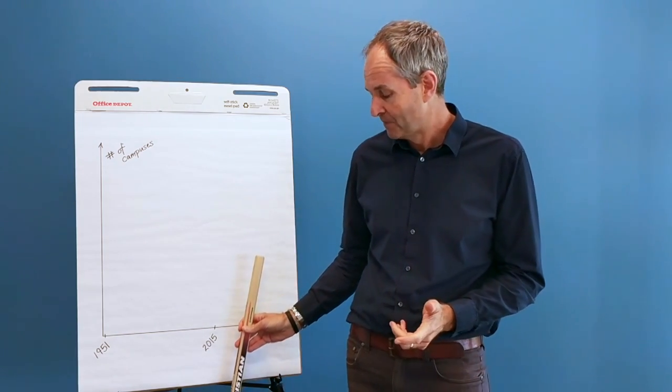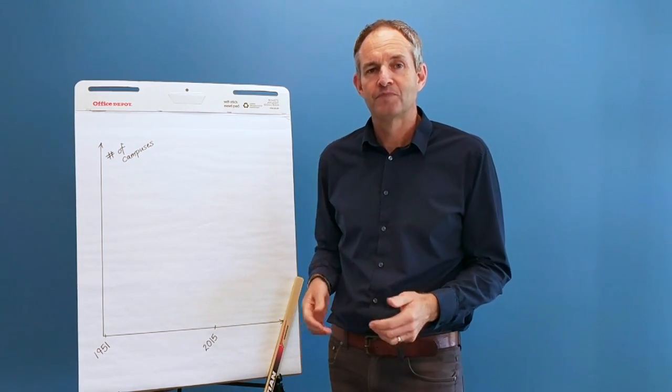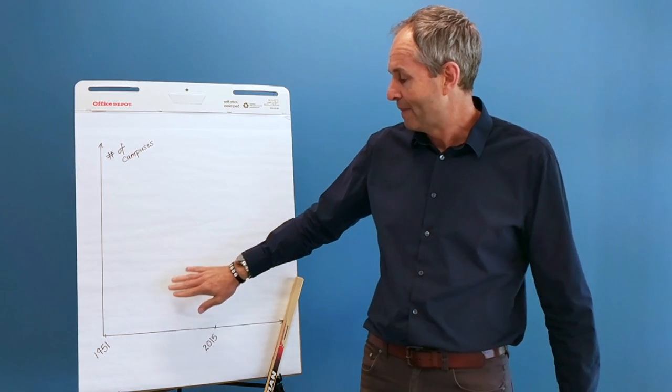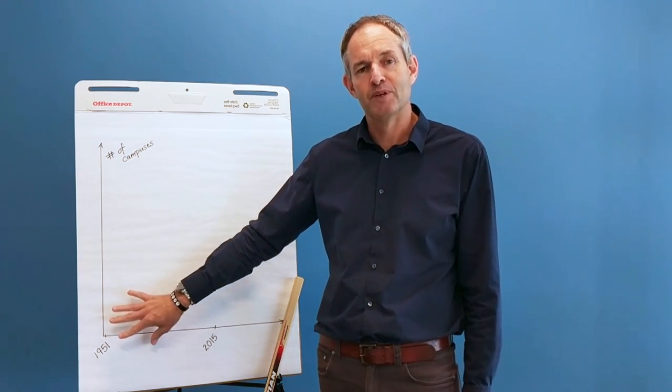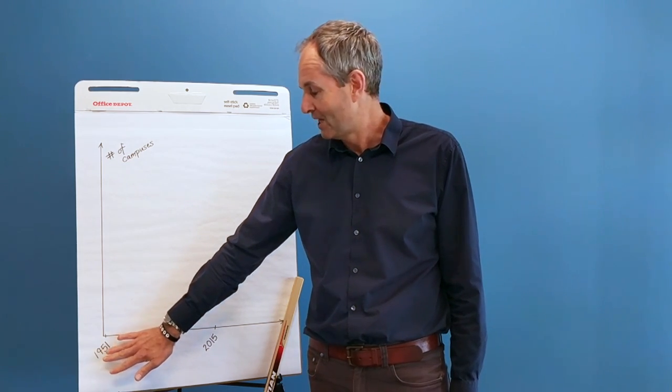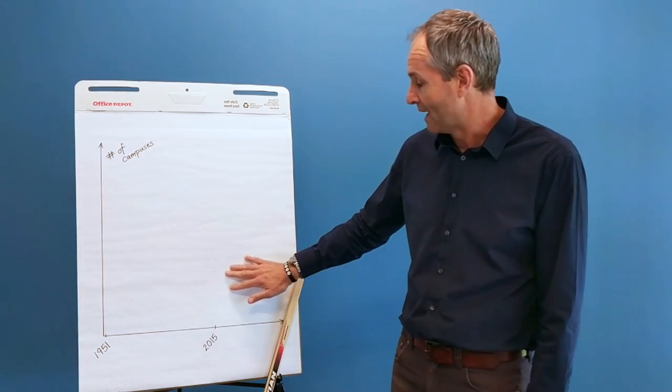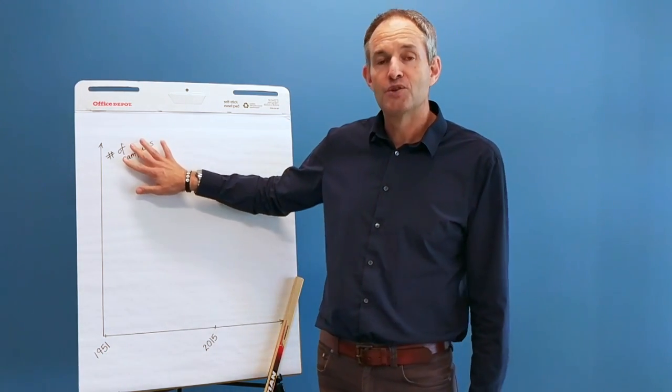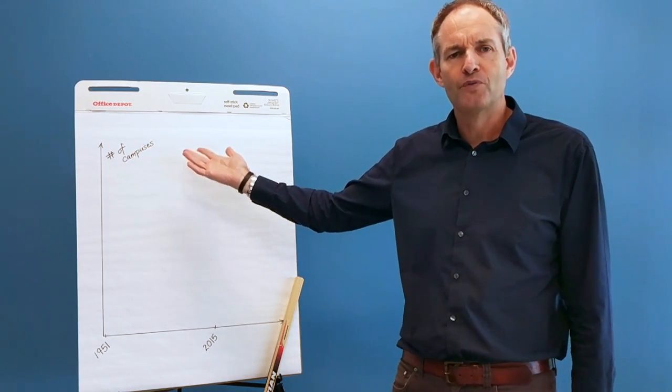Back in 2015, I was with our global campus team, and I drew a chart which basically tracked the growth of our campus ministry since we began with Bill and Von Bright at UCLA in 1951 to where we are today. And we tracked this in terms of the number of campuses that we're involved in around the world.